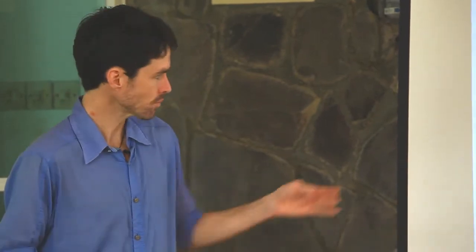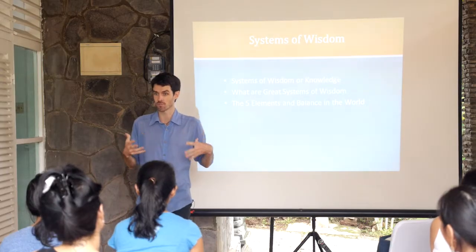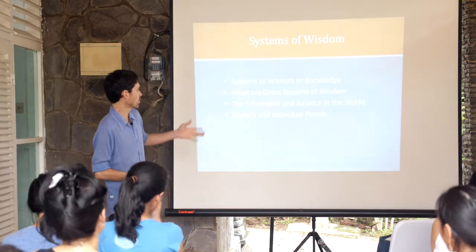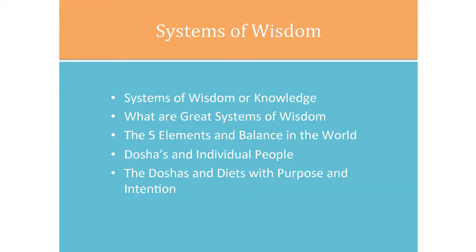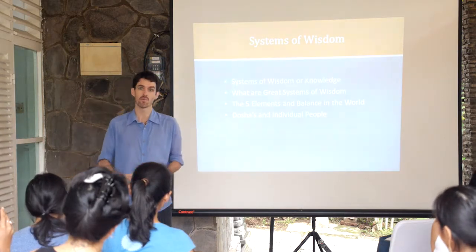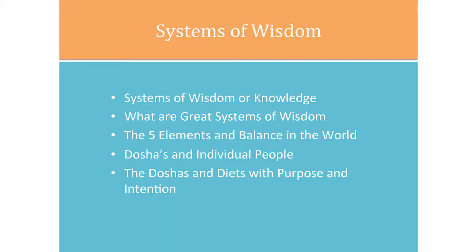We'll look at what are great systems of wisdom that you can use. We're going to look at the five elements and balance in the world — this is one way to define balance from the Ayurvedic perspective. Traditional Indian medicine uses these five elements quite a lot. The next one is doshas, which is how they define your individual body type. There's a lot of information on doshas inside your booklet, and you'll find an abundance on the web. We're going to see how the doshas relate to diets with purpose and intention.